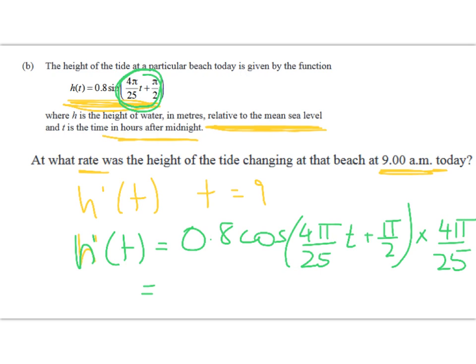That's going to simplify to 3.2π/25, even though that is ugly as well, but that's okay, times cos of this thing here. So that's my derivative. Now what I've got to do is sub in t = 9. I'm going to do that on a new slide.